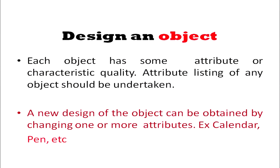Then we come to how we can innovate an object — how we can design a new object. It is very simple. Take any object, say a calendar or a pen. Everything has attributes, some characteristic qualities. We should list down all those attributes, all those characteristic qualities. And once this has been done, you can change one or more attributes and then you get a new design. You list the attributes and then change one or more of them.